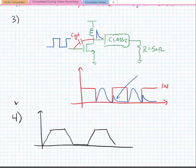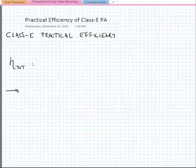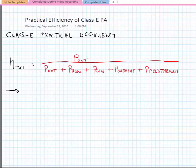And this is all due to feed through. So if we were to go and examine what the practical efficiency of a class E power amplifier would be, it would look something like this. So our practical drain efficiency would be equal to P out divided by P out plus PR switch plus PC in plus P overlap plus P feed through.